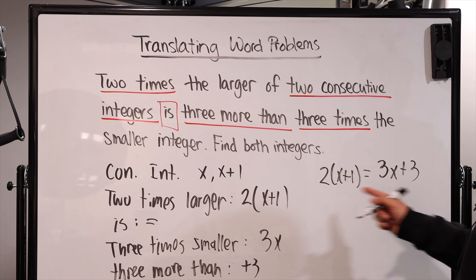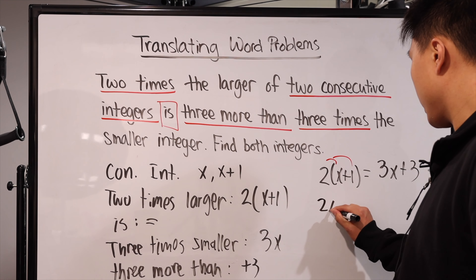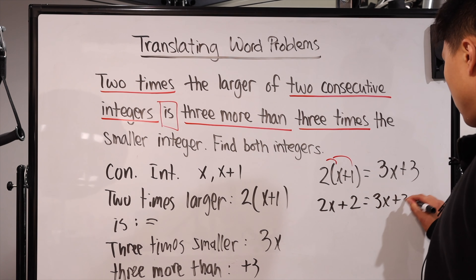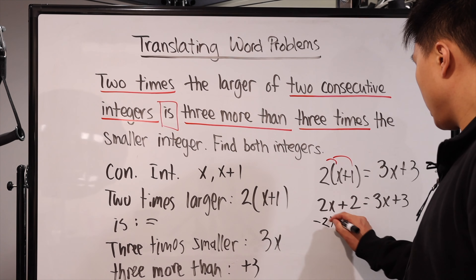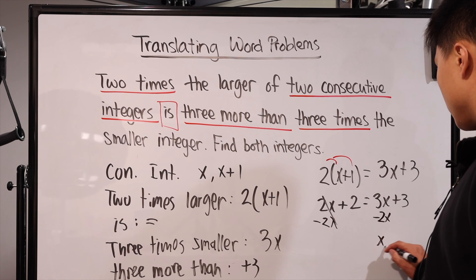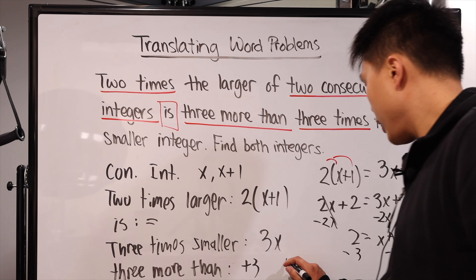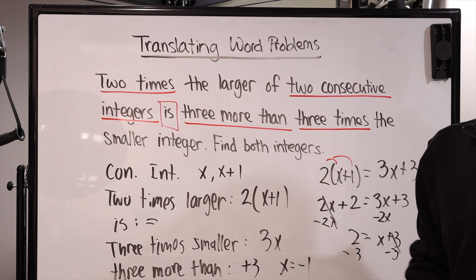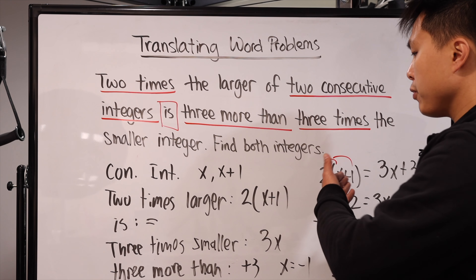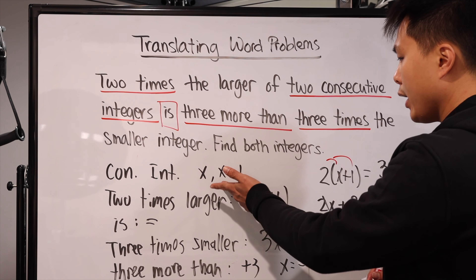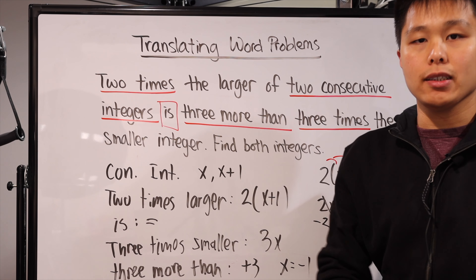When we translate the whole thing, the equation is: two times (x plus one) equals three x plus three. Now we solve. Distribute: two x plus two equals three x plus three. Subtract two x from both sides: two equals x plus three. Subtract three: x equals negative one. But you're not done — remember, the context says find both integers. If x is negative one, then x plus one is zero. So both integers are negative one and zero.